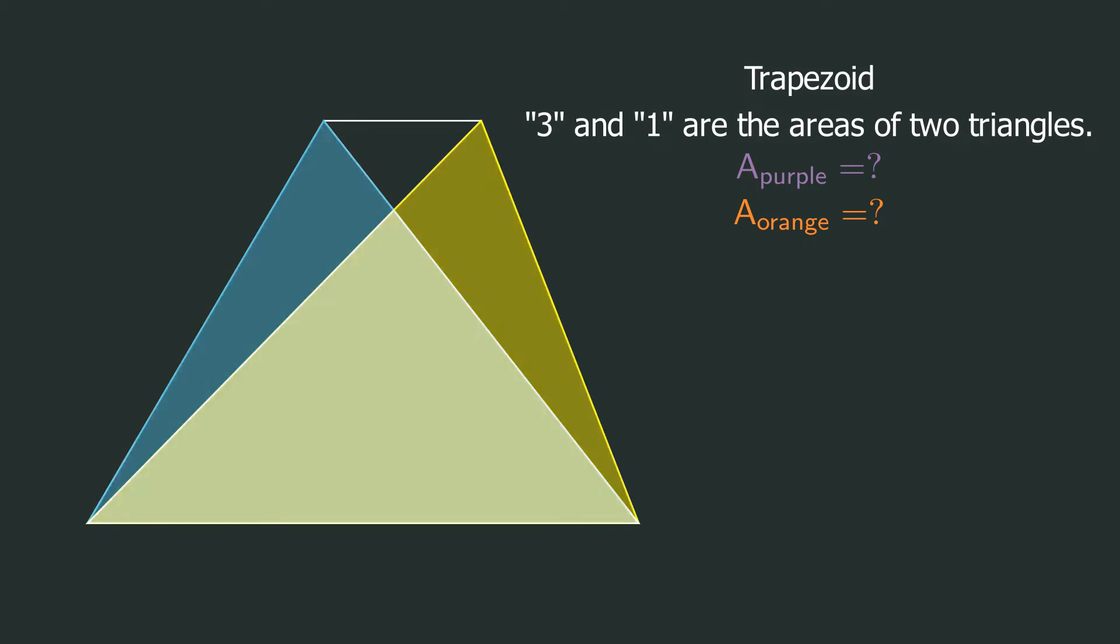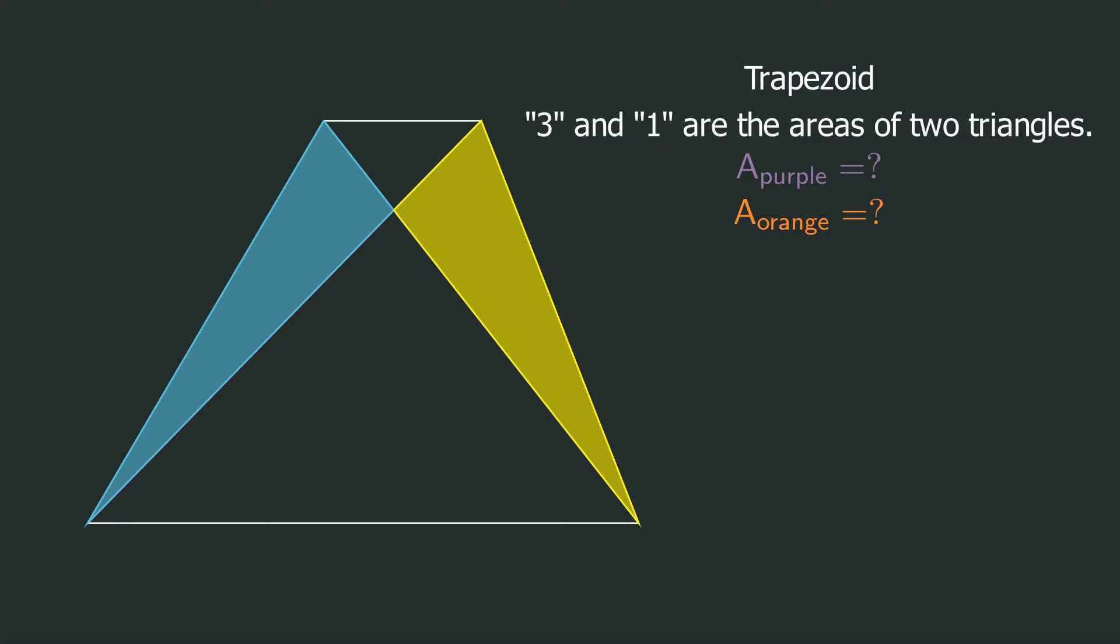So the area of the blue and yellow part is equal, right? We get the first conclusion: when the diagonals of a trapezoid are connected, the areas of the two triangles on the left and right are equal.